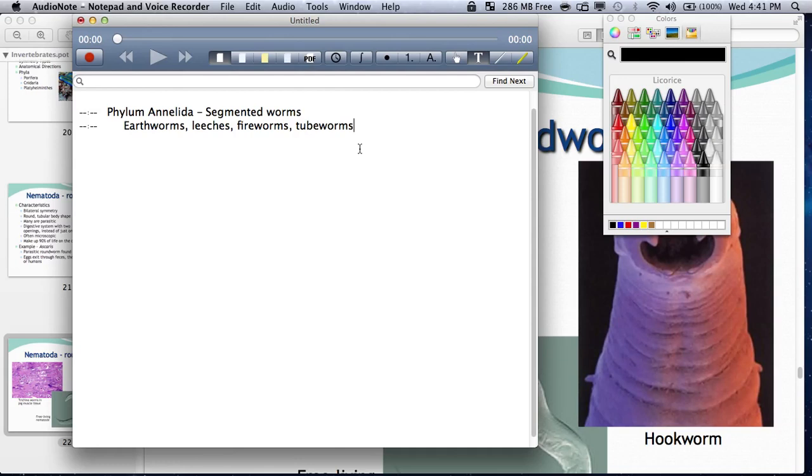So they're segmented worms, which means they have segments that ring around the body, like earthworms. They have rigid segments that just ring around the whole body. So that's one way of identifying members of this phylum, is do they have segments?